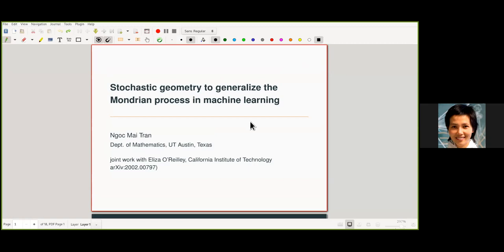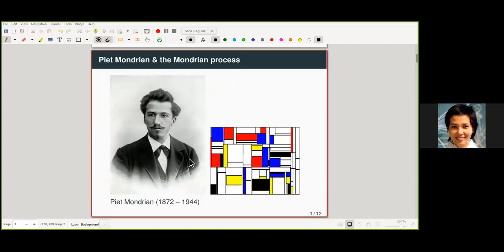Okay, great. Thank you, Christoph. Thank you very much. I'd like to thank the organizers and thank you for being here. So today I'll talk about stochastic geometry to generalize Mondrian process machine learning. So this is joint work with Eliza, who you would hear, she'll come in about an hour.